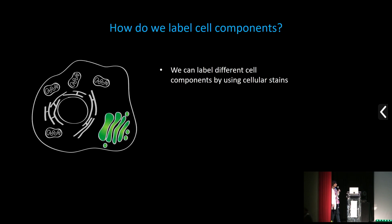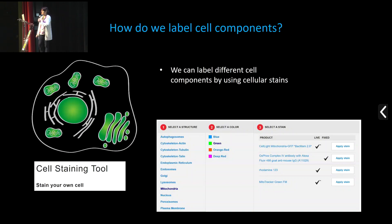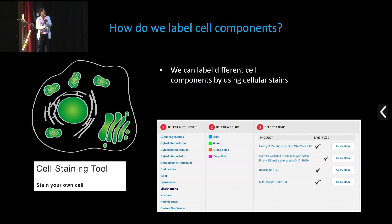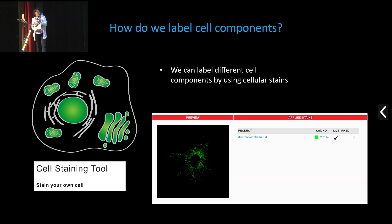You can use different cellular stains to label different organelles inside the cell, and most of these are commercially available. Companies now offer different simulators online where you can go and select the structure — for example, mitochondria — select the color, say green, and then see which products are available and whether they can be used for live or fixed cell labeling.